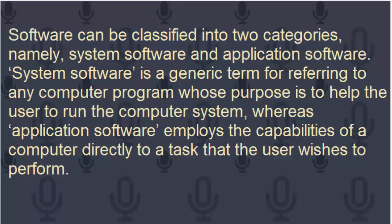Software can be classified into two categories, namely system software and application software. System software is a generic term for referring to any computer program whose purpose is to help the user to run the computer system, whereas application software employs the capabilities of a computer directly to a task that the user wishes to perform.